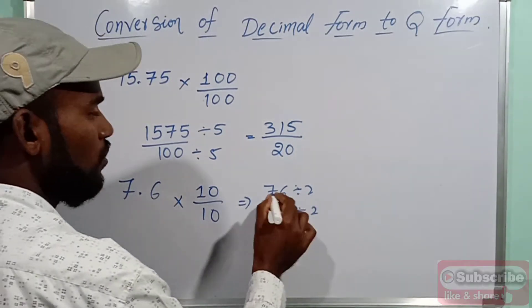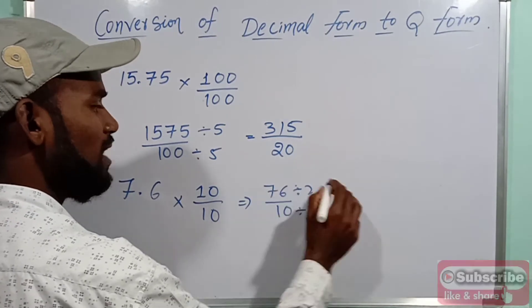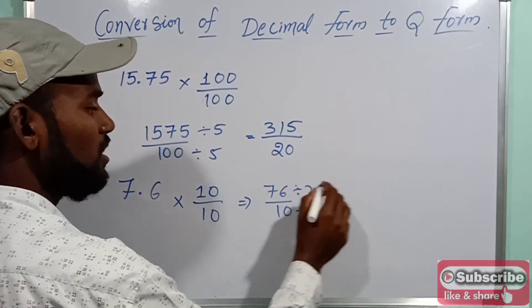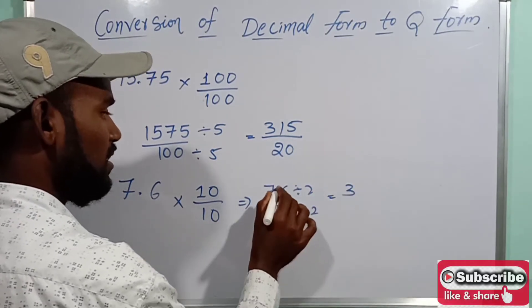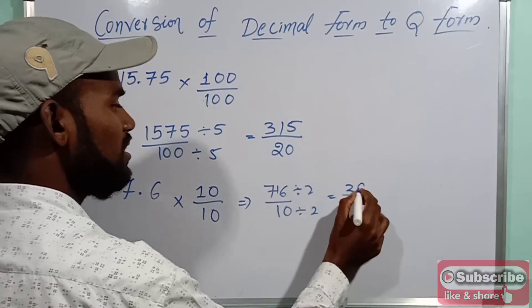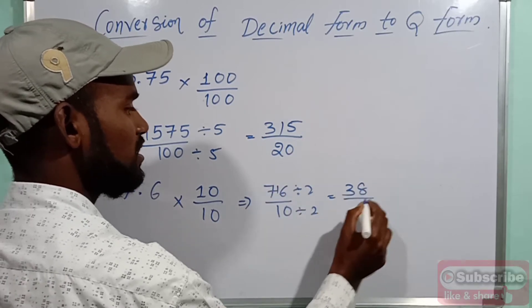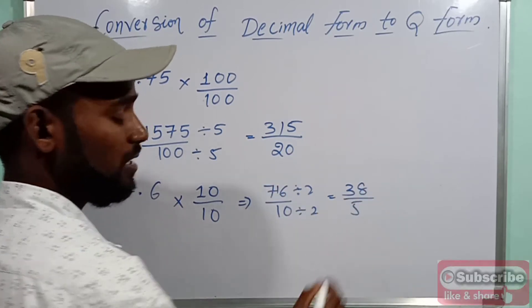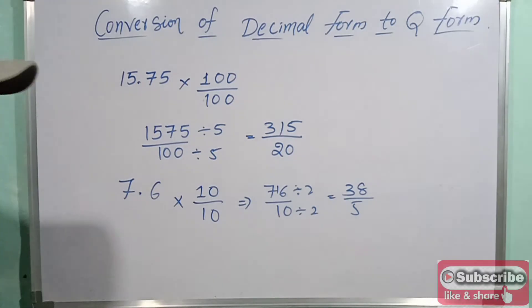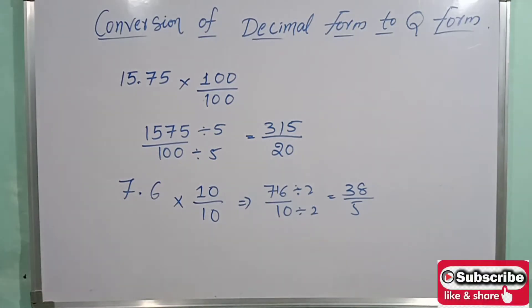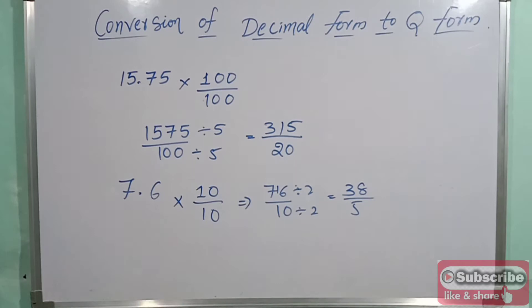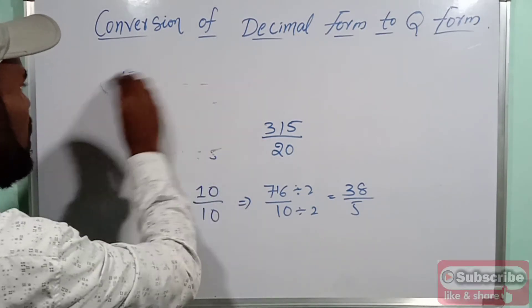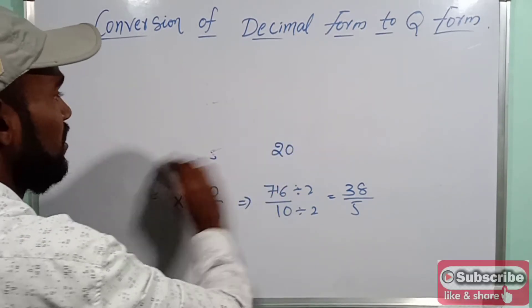Simplifying 76 by 10: two fours are eight, two threes are six, two eights are sixteen, two fives are ten. So this is the simplification. This completes the conversion of terminating decimal form to rational form.